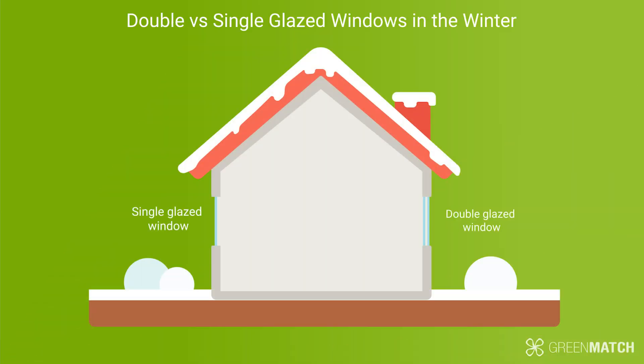Let's compare double glazing to single glazing in winter conditions. Assuming you have an indoor temperature of 21 degrees, the temperature next to a single glazing window is approximately 1 degree, while next to a double glazing window is 16 degrees.